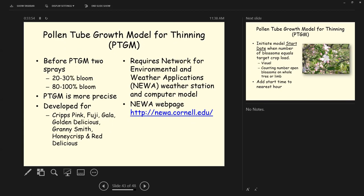Previous to the pollen tube growth model for thinning, the recommendation was to make a spray at 20 to 30 percent bloom, and then another spray at 80 to 100 percent bloom. The PTGM model is more precise than this. And it's been developed for a number of varieties: Cripps Pink, Fuji, Gala, Golden Delicious, Granny Smith, Honeycrisp, and Red Delicious. So this thing is variety specific. And it requires a network for the environmental and weather applications, newer weather station, and the computer model. So this is the the web page we looked at for the previous model.